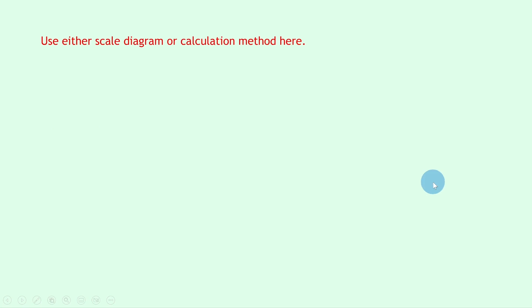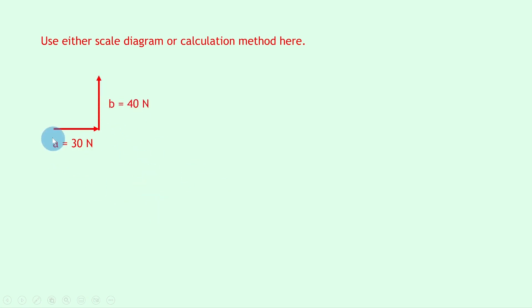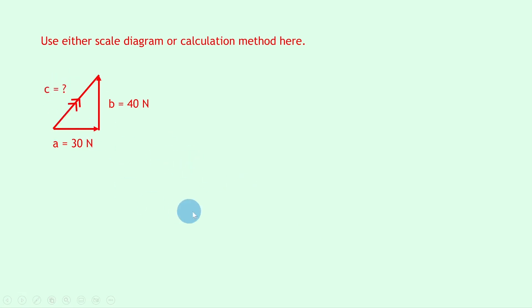I'm going to use the calculation method, so let's draw a sketch first. We've got our 30 newton vector which I'll call A, and our 40 newton vector which I'll label B, joined nose to tail. Then let's mark on the resultant vector going from the starting to the finishing point — labeled with a double arrow — and label that side C, the unknown. We've got a right angle and angle theta next to the starting point.